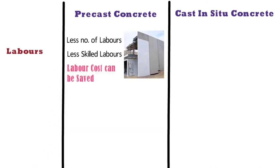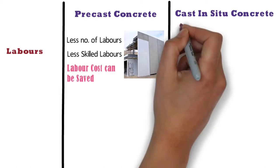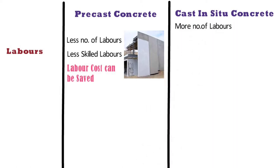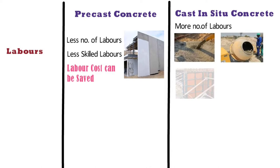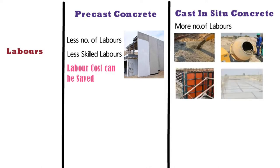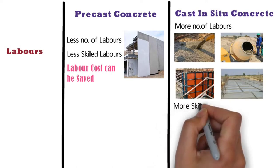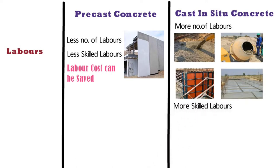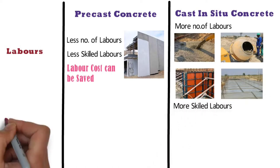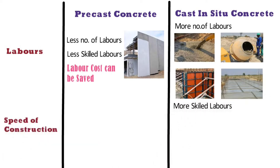For the cast in situ method, more number of labour shall be required, as all the works like pouring, mixing, shuttering, deshuttering, and curing shall be done at site. And also for these works, more skilled labour shall be required.